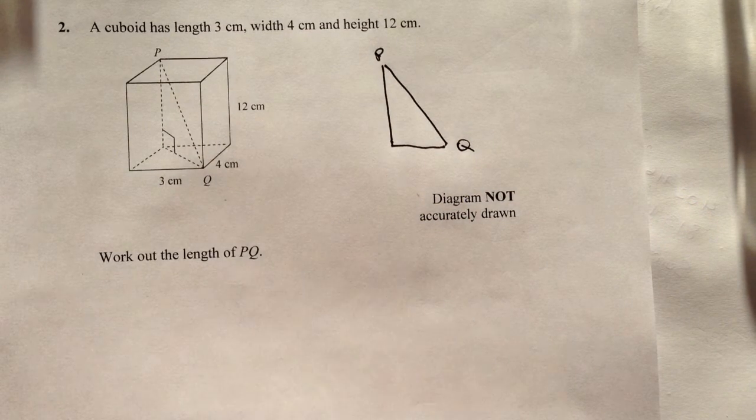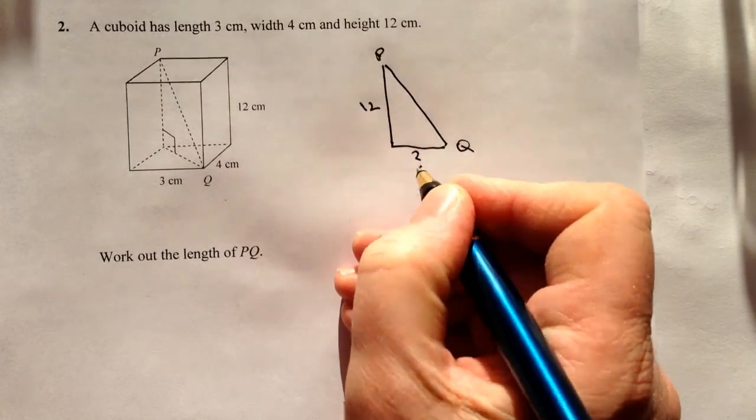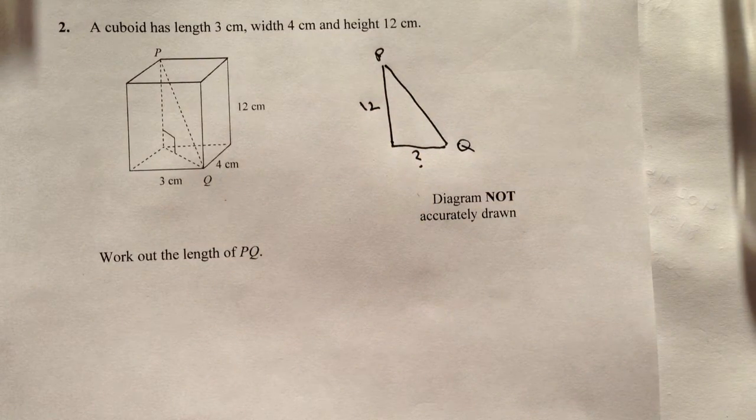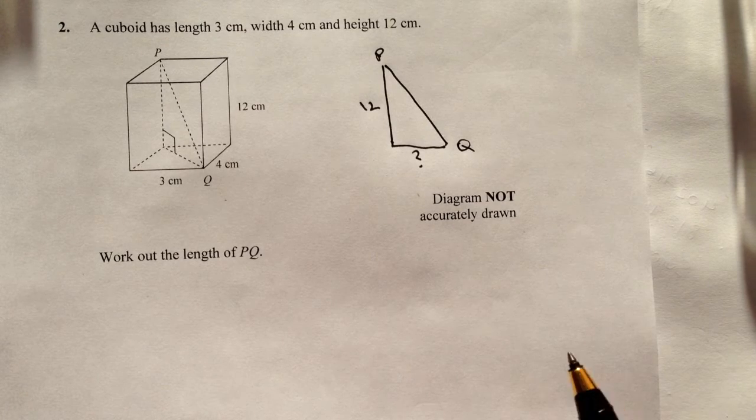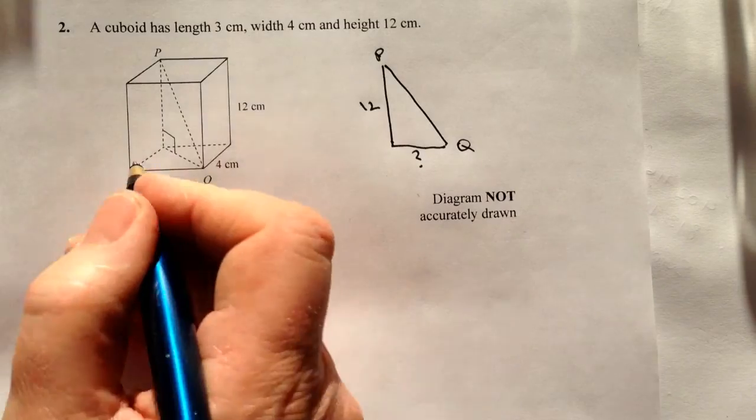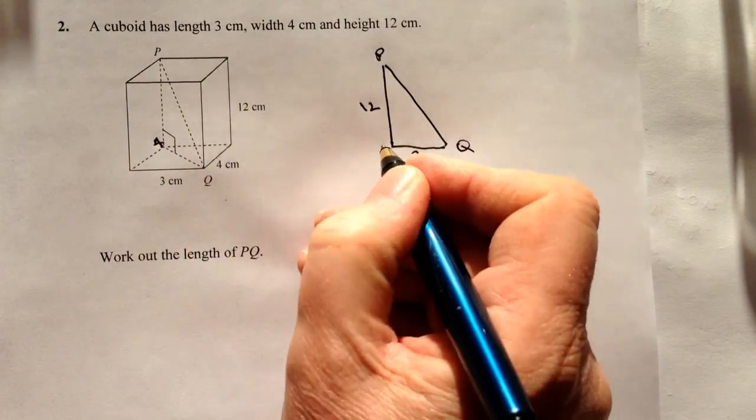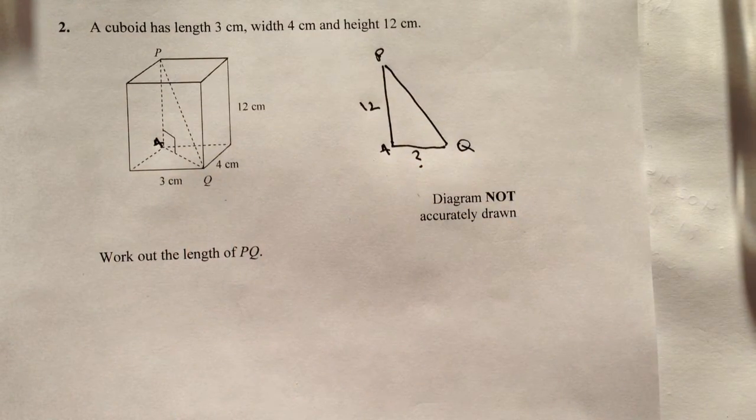Also, we do know that this is a height of 12, but we don't know this. Well, in order to use Pythagoras to solve this particular question, we have to work out this. So what I'm going to do is call that A, and so we've got AQ along there.